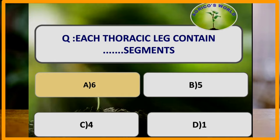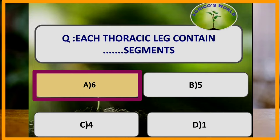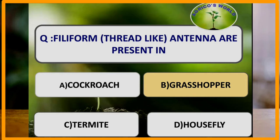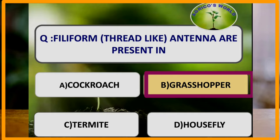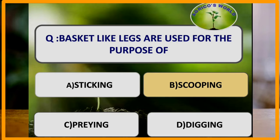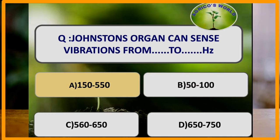Each thoracic leg contains how many segments? Each thoracic leg contains six segments: coxa, trochanter, femur, tibia, tarsus, and pretarsus. Filiform, that is thread-like antennae, are present in grasshoppers. Basket-like legs are used for the purpose of scooping. Johnston's organ can sense vibrations from 150 to 550 hertz.